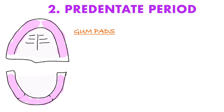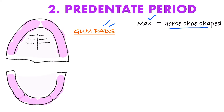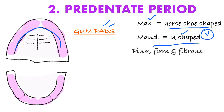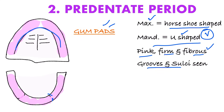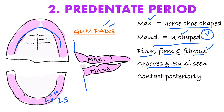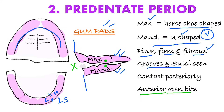In the pre-dentate period, when there are no teeth, there are gum pads. A viva question: the shape of the maxillary gum pad is horseshoe-shaped, while the mandibular gum pad is U-shaped. These are pink fibrous structures with various lateral sulci — grooves present between the canine and molar regions. Viewed from the side, the maxillary gum pad is larger than the mandibular, and they contact only in the posterior region.